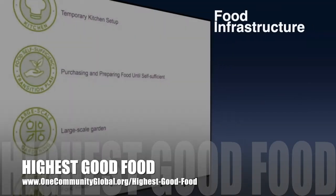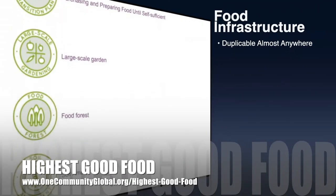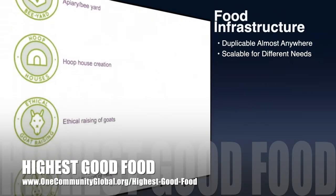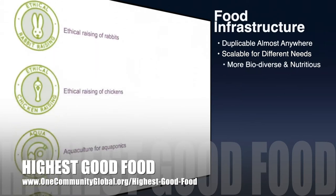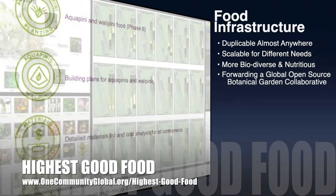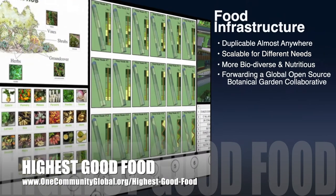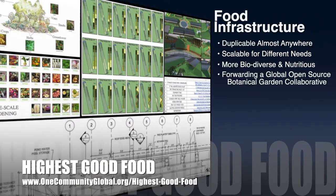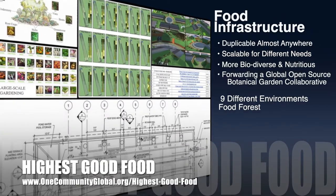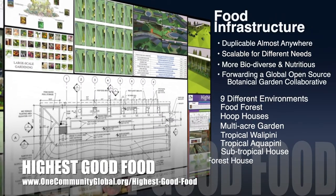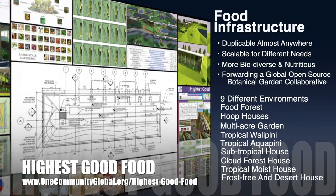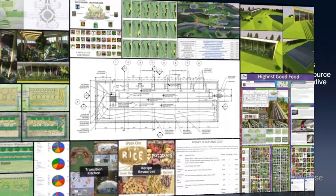One Community's approach to highest good food is duplicable almost anywhere, scalable for different needs, more biodiverse and nutritious, part of forwarding a global open source botanical garden collaborative, and includes nine different free shared and duplicable growing environments. The next component is highest good education — this component is complete and pretty much ready to launch once we're on the property.